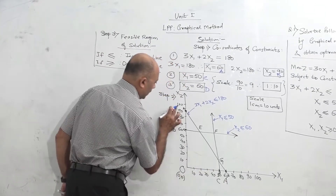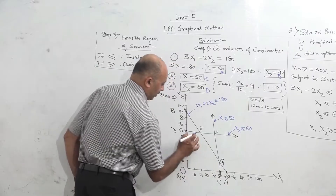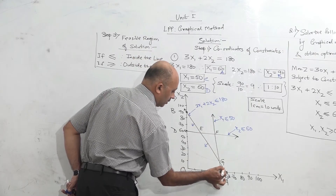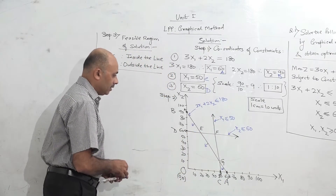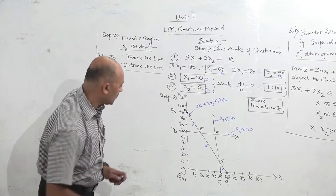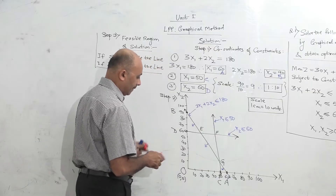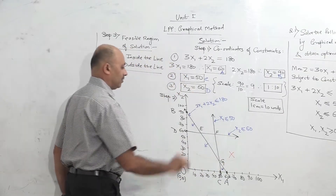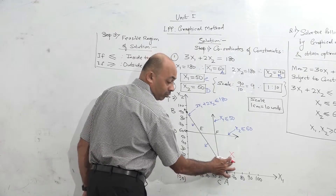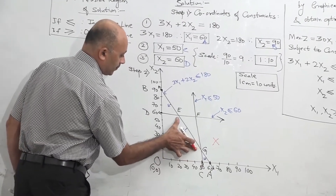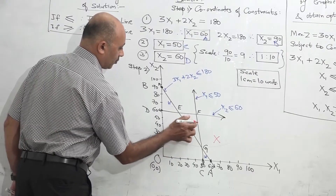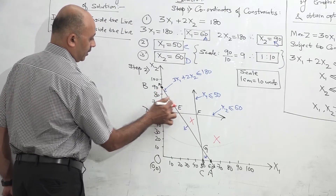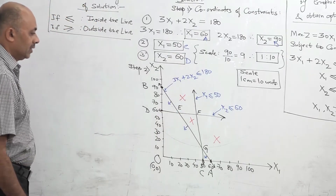We will select one line at a time and eliminate those areas which are not part of the feasible region. Start from line AB. Since this constraint is less than or equal to, the region has to be inside the line. Start from A to G — the region is inside — so the outside part you cancel in pencil, it is not possible. Come from G to E — again region is inside — so this triangle is cancelled. Then from E to B — region is inside — so this part is also cancelled.